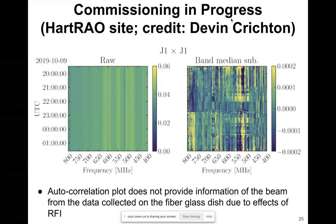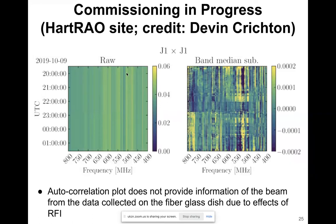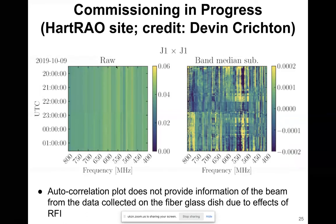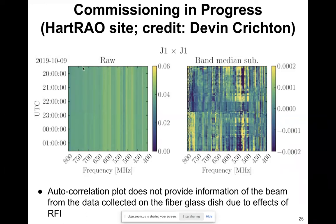Commissioning is in progress. These are some preliminary measurements we obtained. You can't really tell much from this auto-correlation plot because of the effect of RFI. We plan to make some modifications to our signal chain so that we can get a better auto-correlation plot to understand our beam.